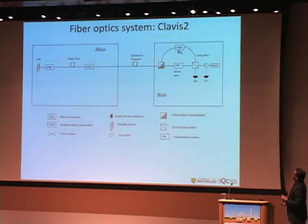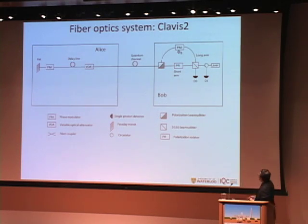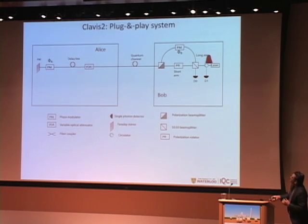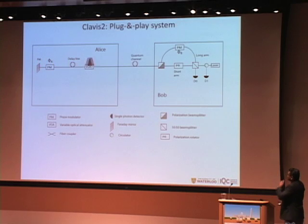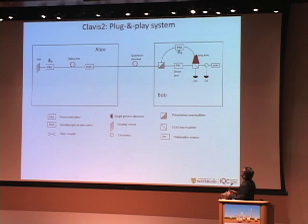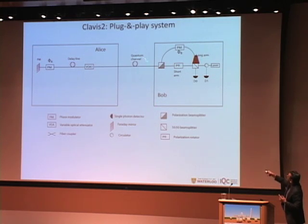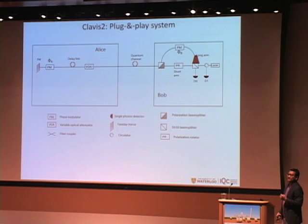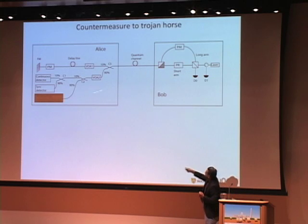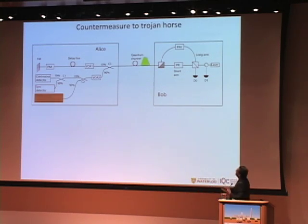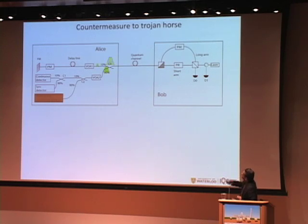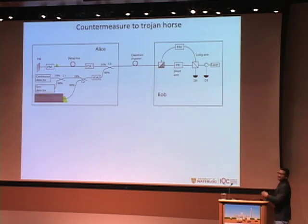We move on to the second example, tested on the Clavis system. This is a plug-and-play QKD system where Bob has the laser, sends it to Alice, Alice does the necessary encoding and attenuation and sends it back. This avoids many technical problems but suffers from a vulnerability: if an eavesdropper adds extra energy into the line while light is traveling toward Alice, it will return with the actual encoding information. To prevent this, the system has a pulse energy monitoring detector — any extra light is split, with part going to this detector to detect the extra injection.